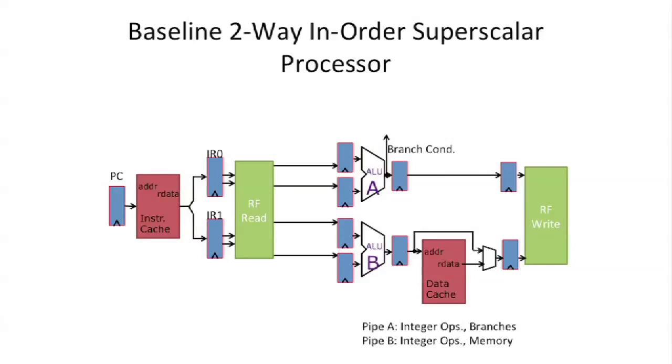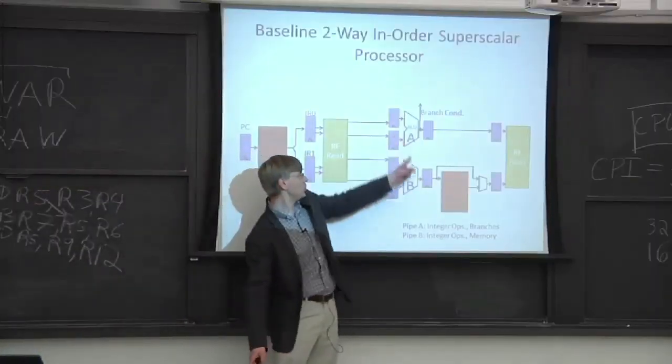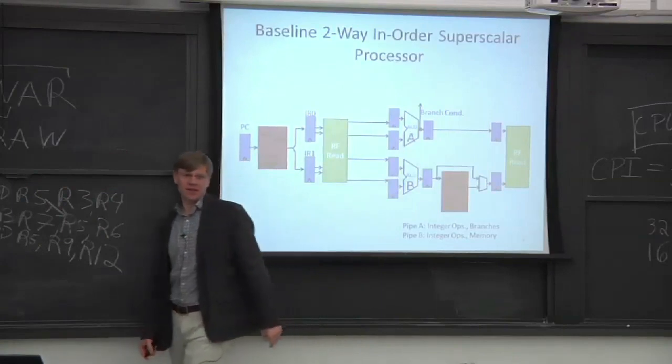Let's look at a baseline two-wide in-order superscalar. That's a mouthful to say. So different than the pipelines we've seen before, we have two ALUs. It's a big difference.